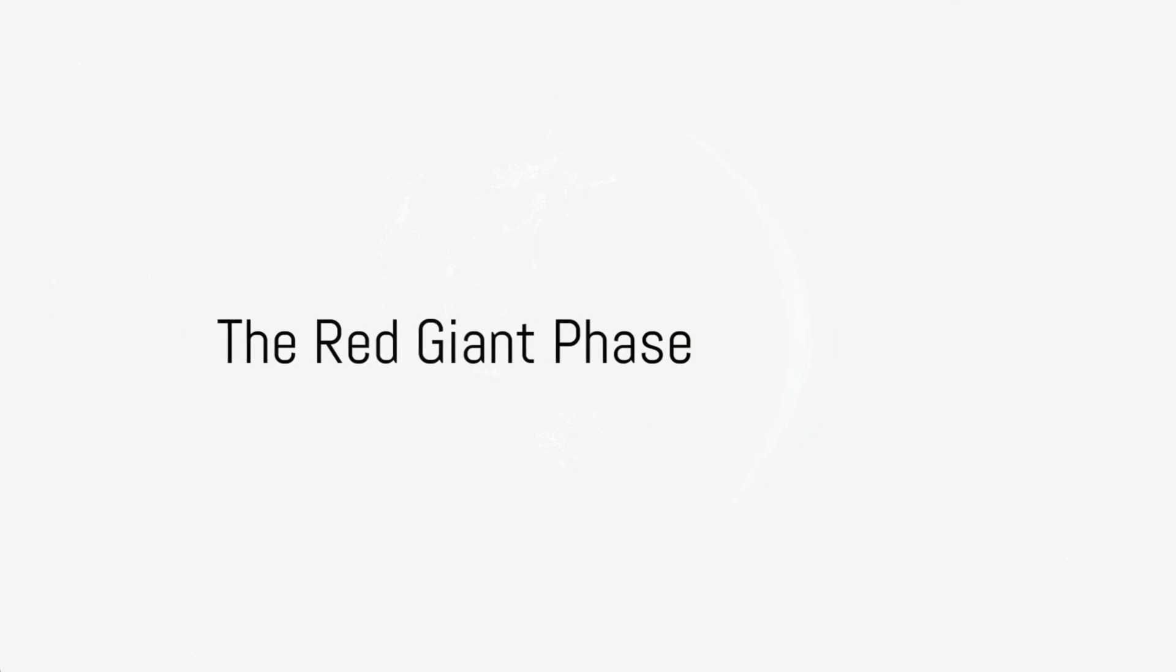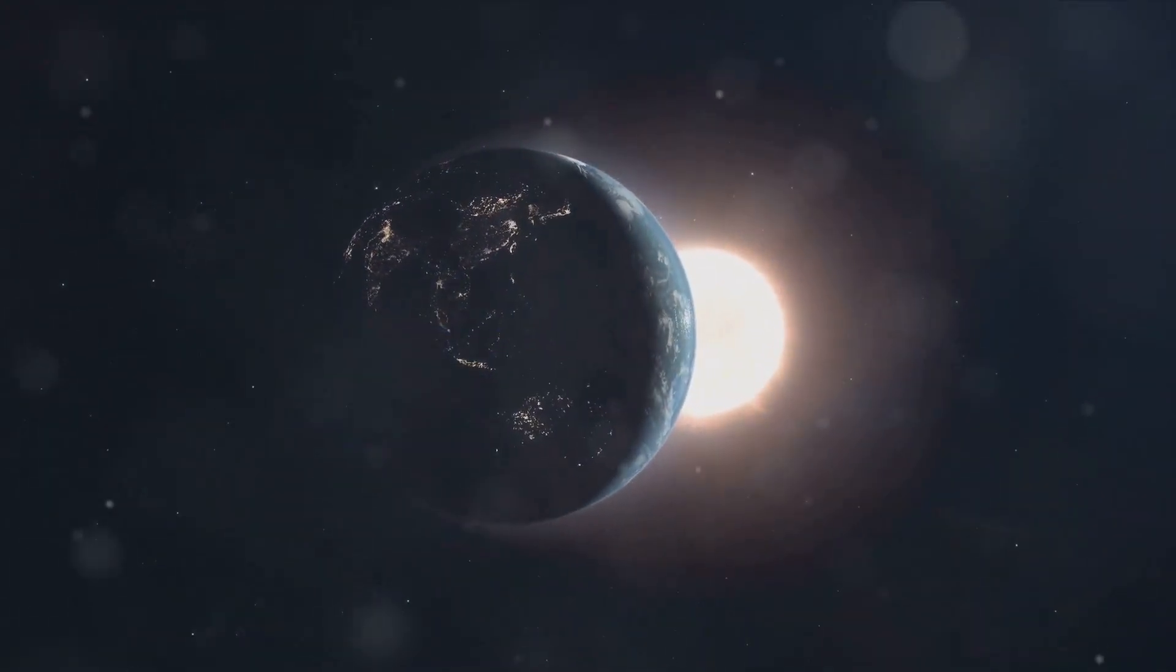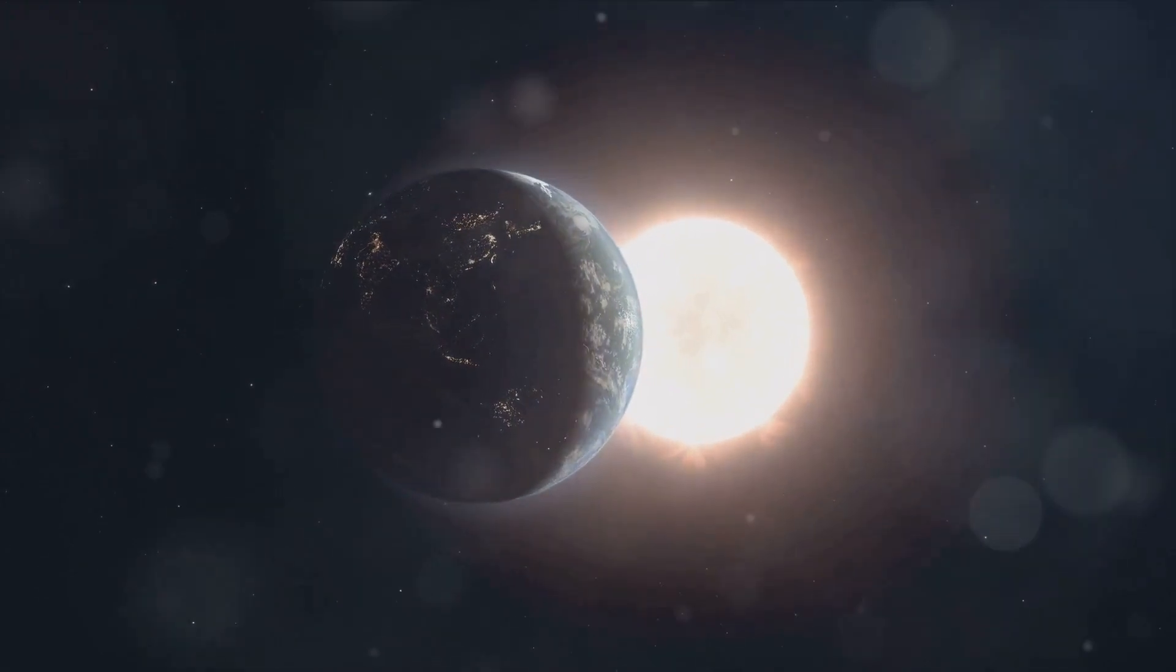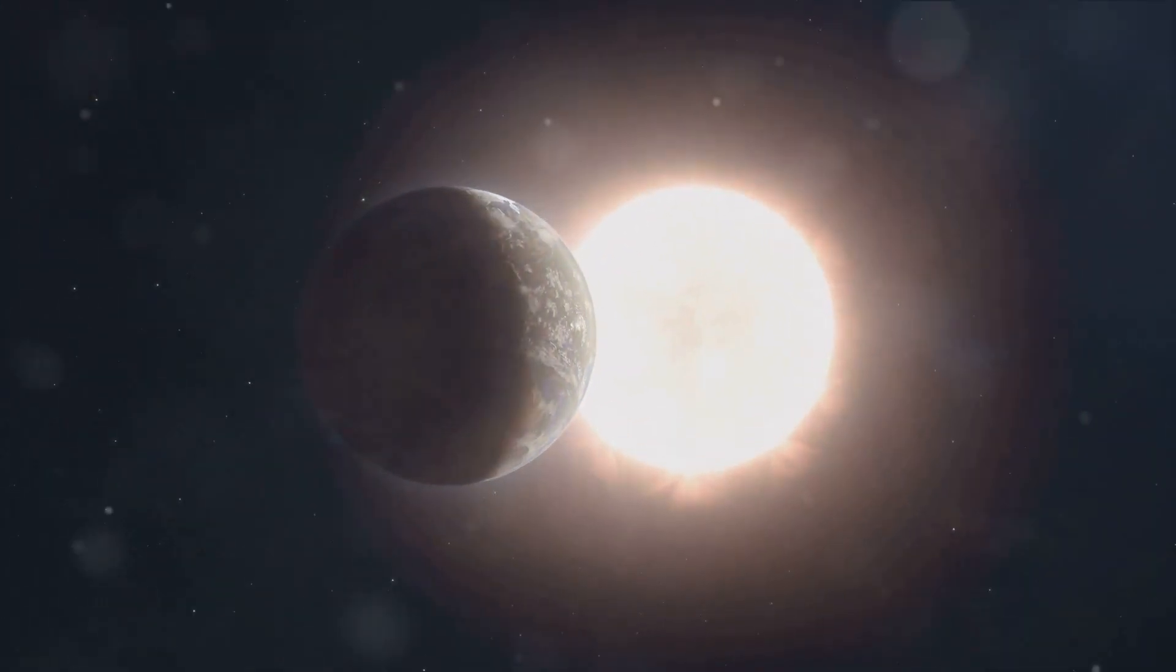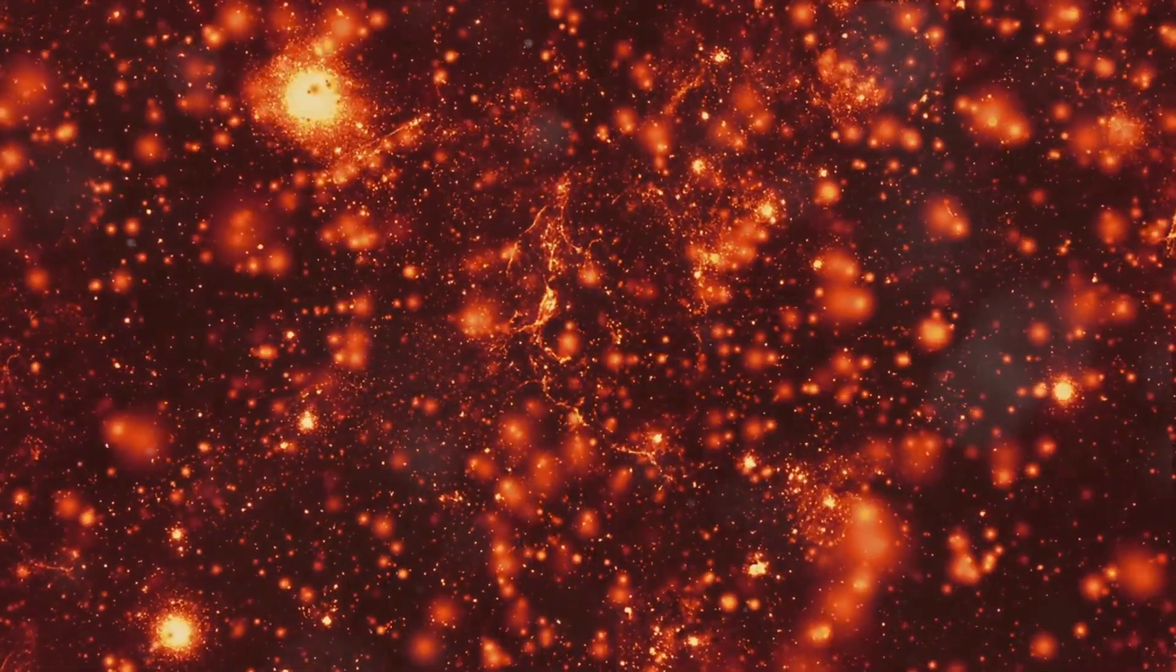However, this phase won't last forever. In about 5 billion years, the Sun will exhaust its hydrogen fuel. As the core collapses, the outer layers will expand, and our Sun will evolve into a red giant. This phase will mark the beginning of the end for our star.